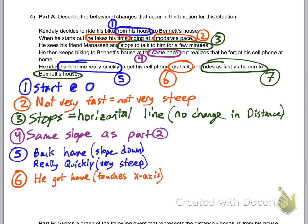Last thing, he says he rides as fast as he can. That sounds like he went even faster than from part five. So for number seven, you need to make this as fast as he can. That needs to be even steeper than part five.